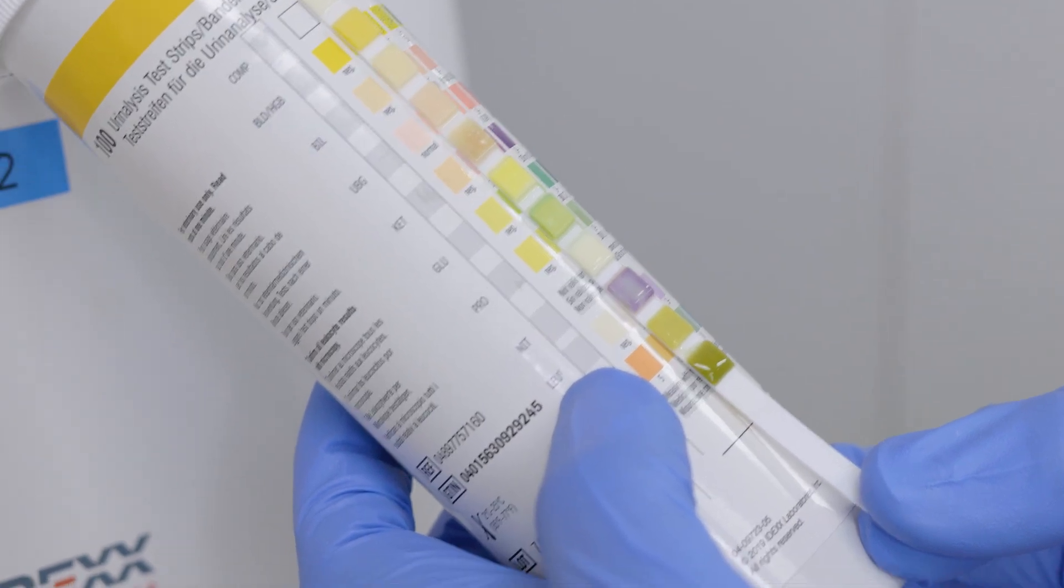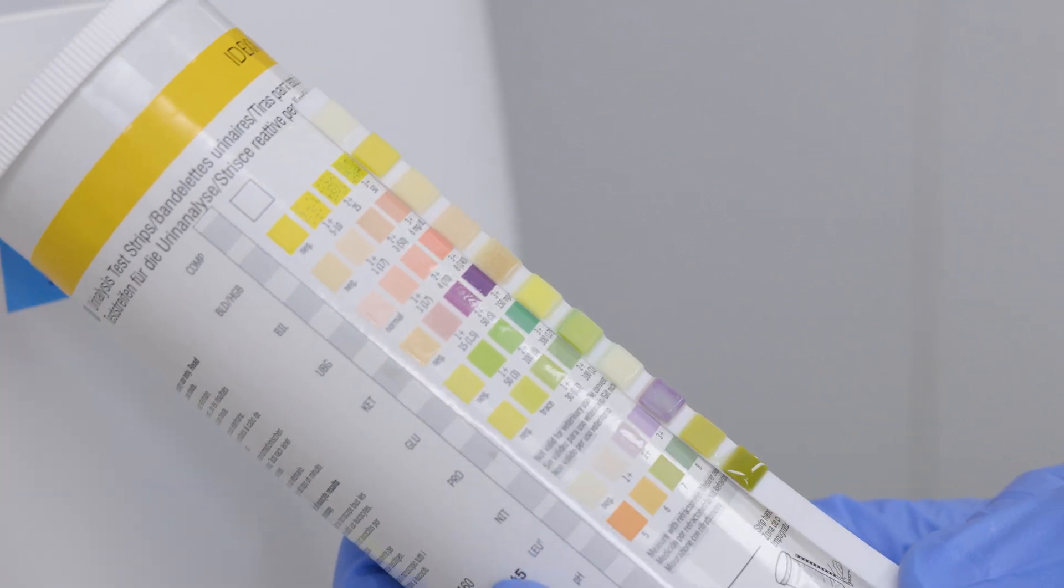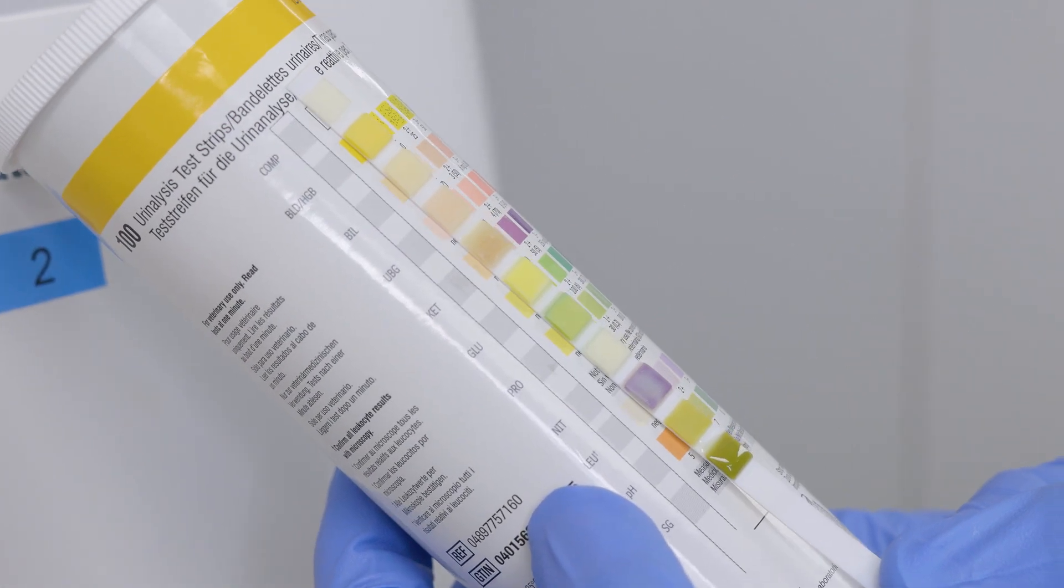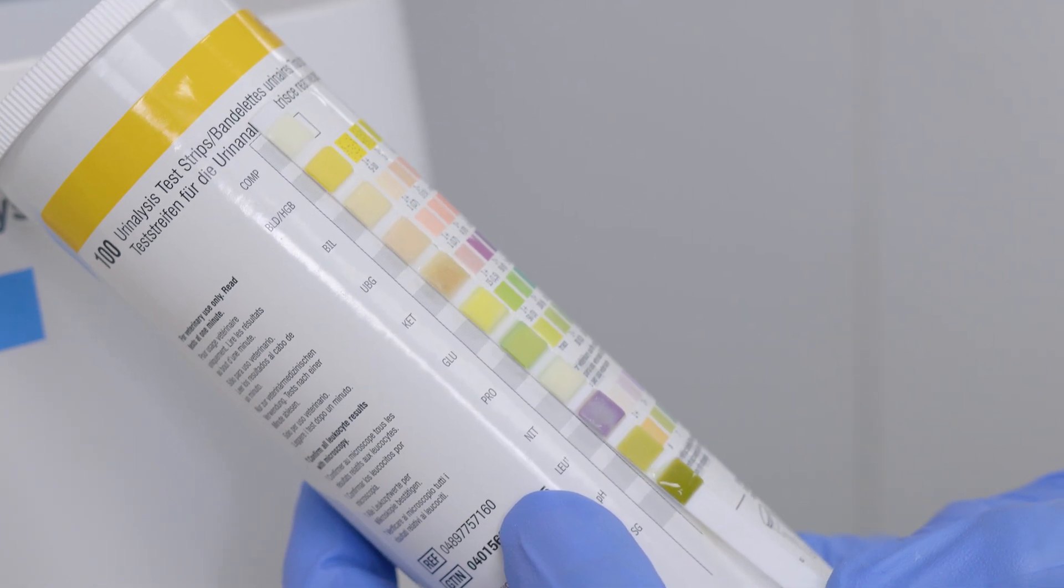Also if we were going to look at our leukocytes you could see that they are showing up at a three plus. So we want to make sure that we evaluate that a little bit further and also look at the other parts of our urinalysis to ensure that we have the full picture.